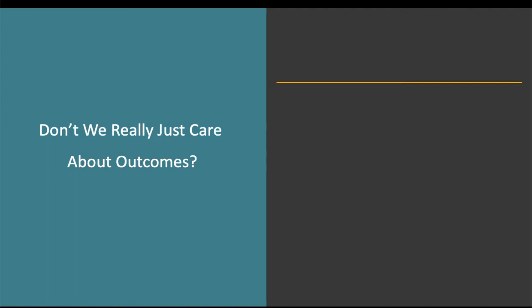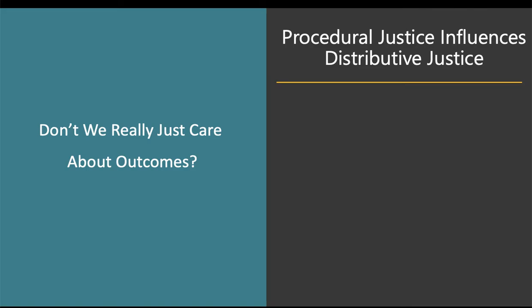It's important to consider whether we care just about outcomes. If you get a promotion, do you only care that you got it? Research tells us that procedural justice actually influences our perceptions of distributive justice — whether outcomes are perceived as fair. If you were going up for a promotion and you get it, that's a good outcome. In this instance, you're unlikely to go back and really examine the process used to determine you got the promotion. You generally just take the good outcome, take the bonus or promotion, and have no more questions.